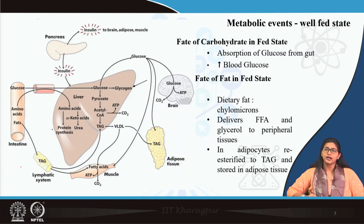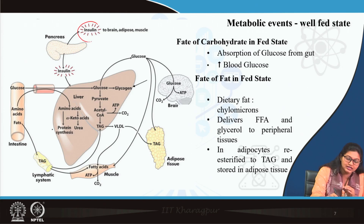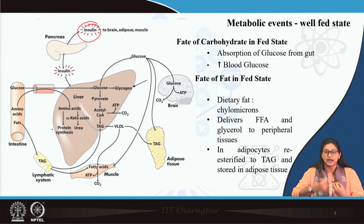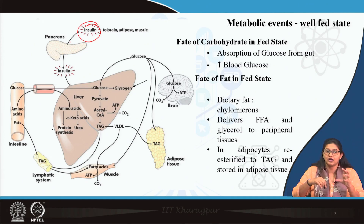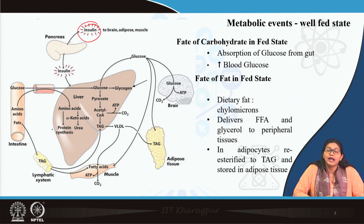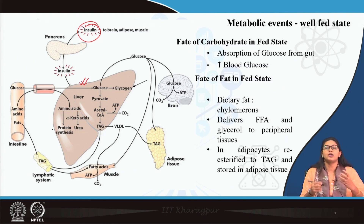In the well-fed condition, the hormone is insulin. When we take a meal, the blood glucose level rises and is sensed by the beta cells of the pancreas, which secrete insulin. Insulin is important for clearing glucose from the circulation and its proper utilization. Insulin enhances glycolysis in the liver. Remember — the liver is the metabolic hub, and all nutrients first enter the liver.